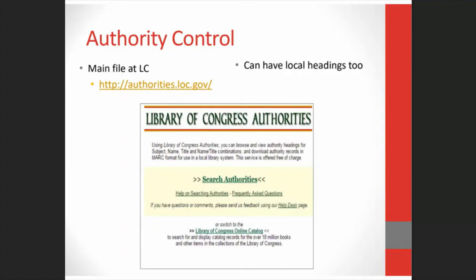An authority record is a lot like a catalog record, only instead of having information about an item, it has information about a person or a subject or a place, etc. There are official files of authority records, and the one used by many libraries is maintained by the Library of Congress. In the Library of Congress authorities file online, you'll find nationally authorized headings for subjects, names, titles, and name-title combinations, which can be downloaded for free into your library's catalog.